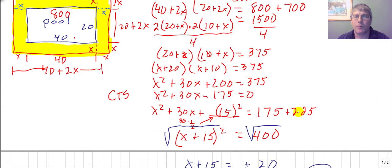So we've completed the square. Obviously we could have factored that. But we get x equals 5. That is the width of the sidewalk.